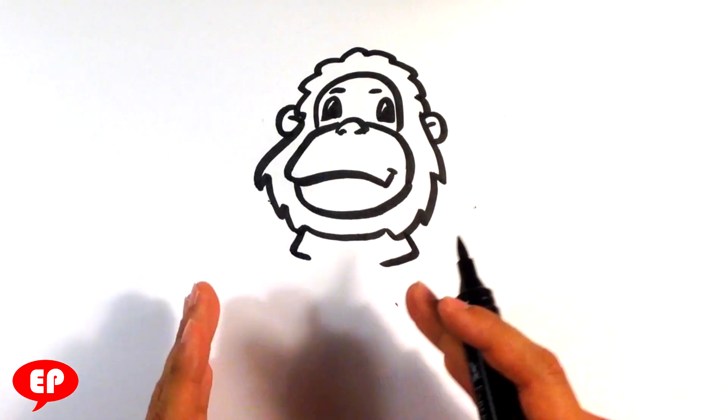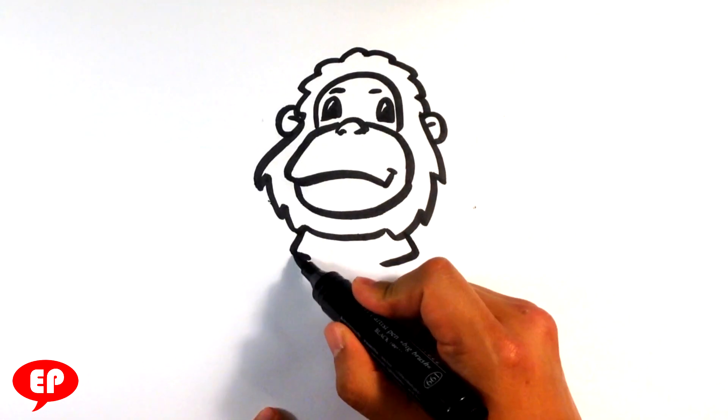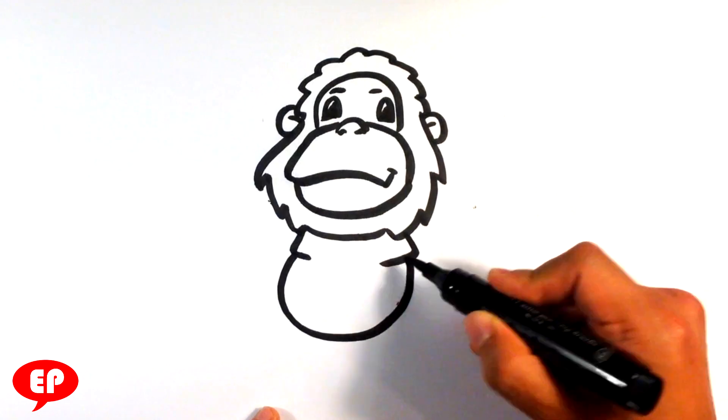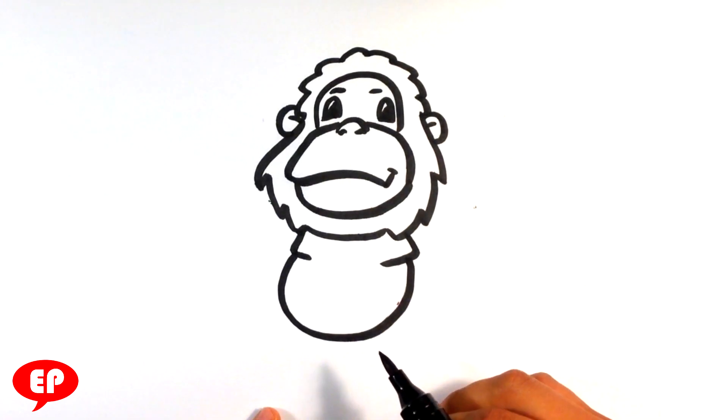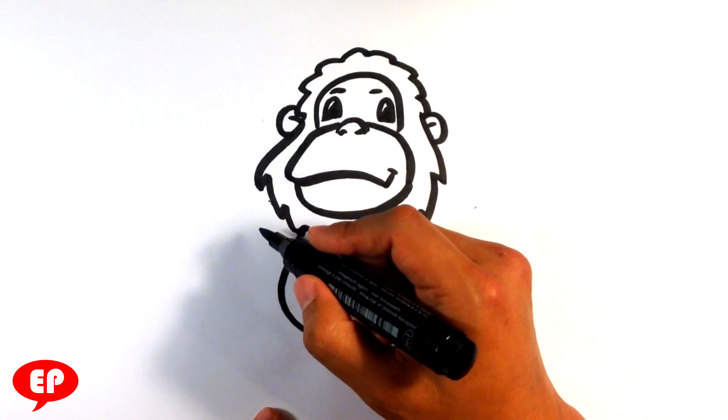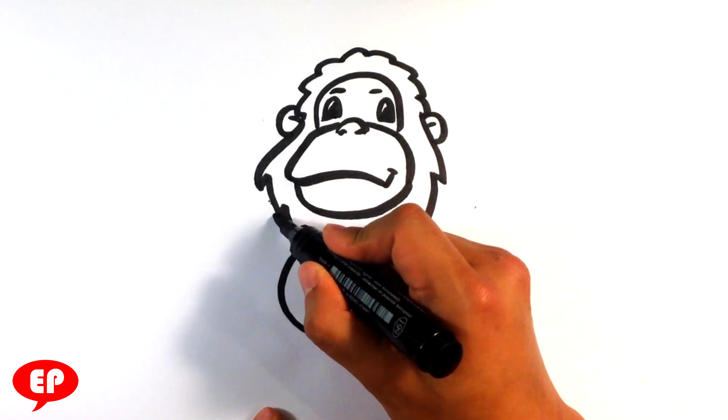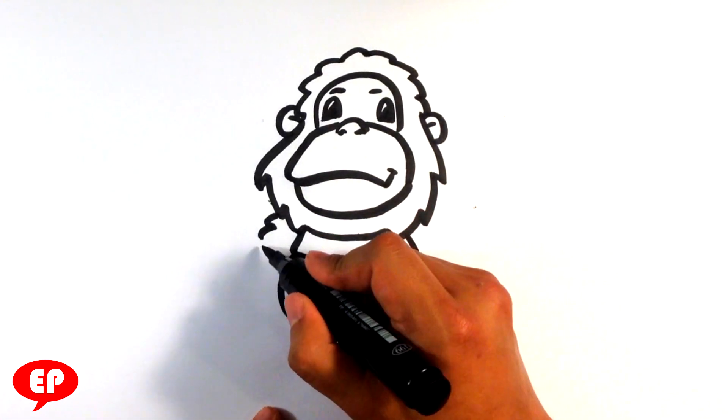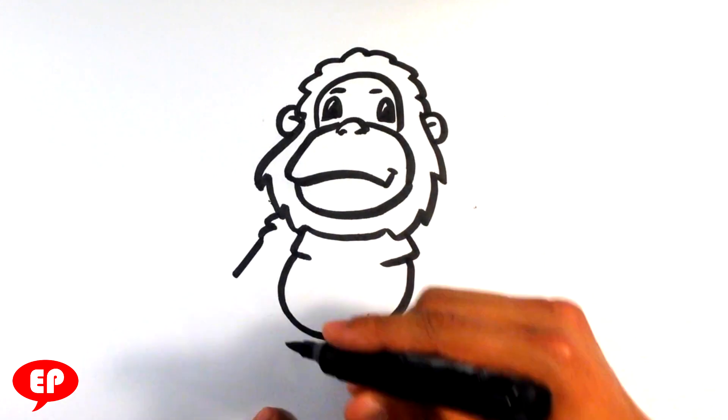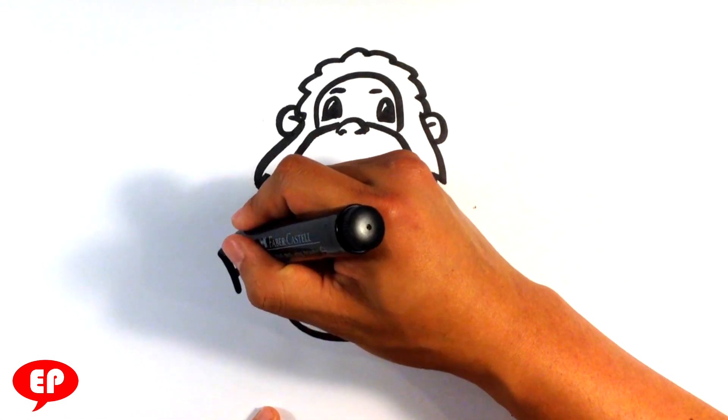Top part of the chest is just like this L and backwards L. Round shape right here, connecting to that. That's going to be his chest, stomach area. Top of the shoulder is a little bit furry, then straight line. Arm.